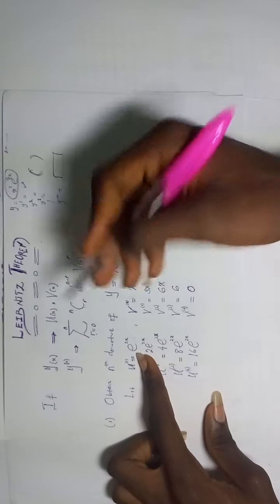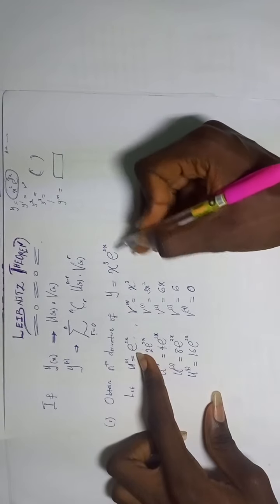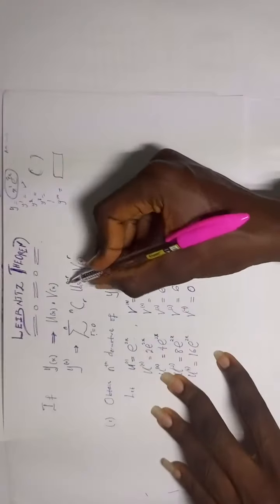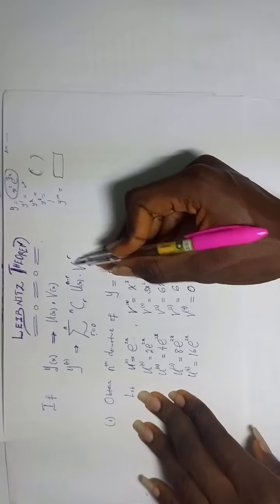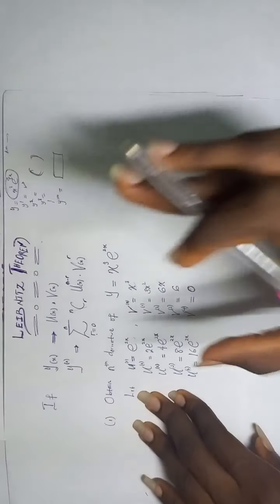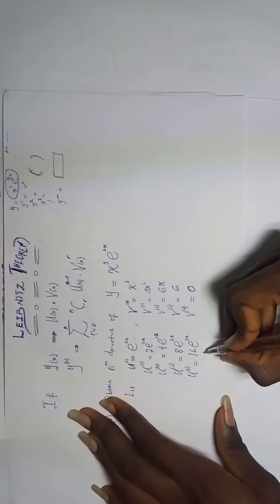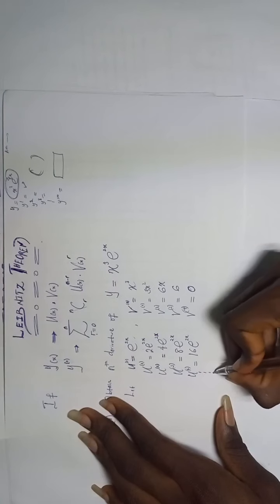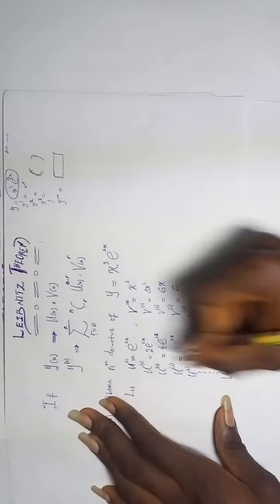If I call x³ to be my u and keep differentiating, I need it to terminate to zero — but can I easily find a general formula for it in terms of n? No, I can't. But if I let e^(2x) represent my u and keep differentiating, I know it follows a pattern and I can easily find a general formula in terms of n. So wherever you have n on u, make sure that u is something you can easily generalize. If n is on v, then v must be something that can be generalized.